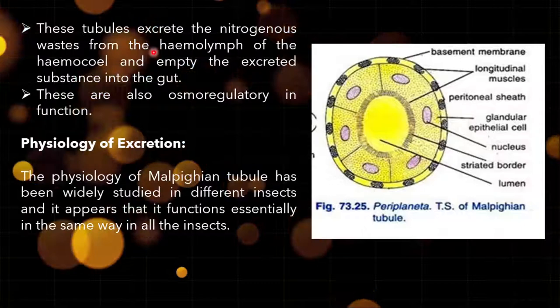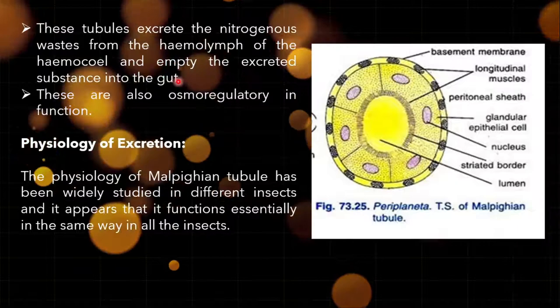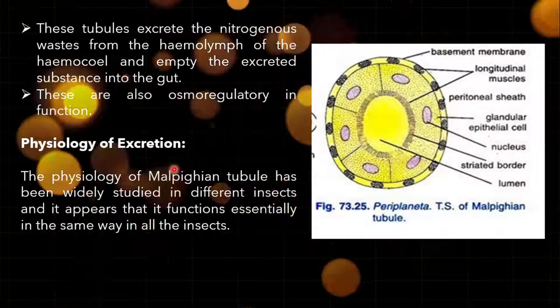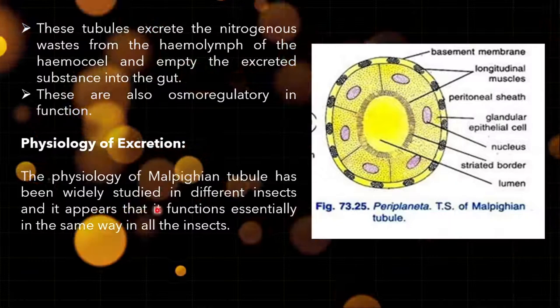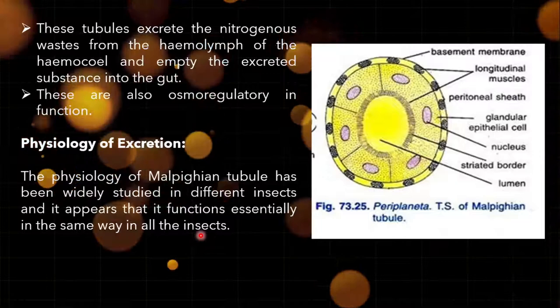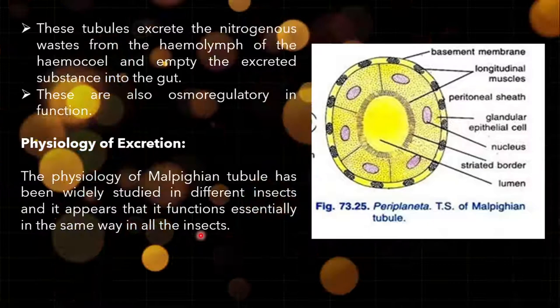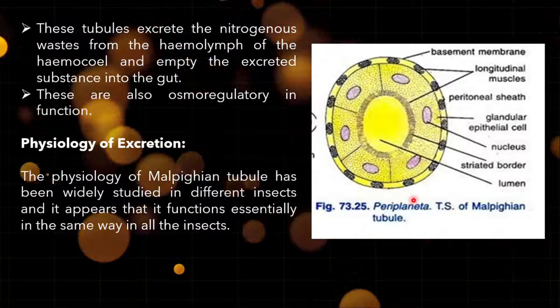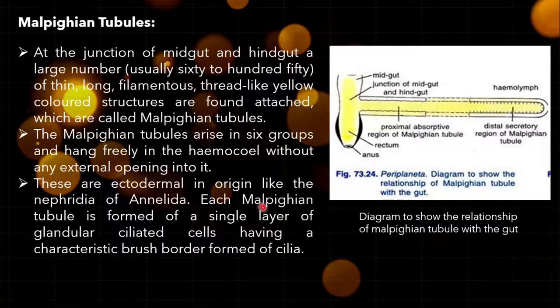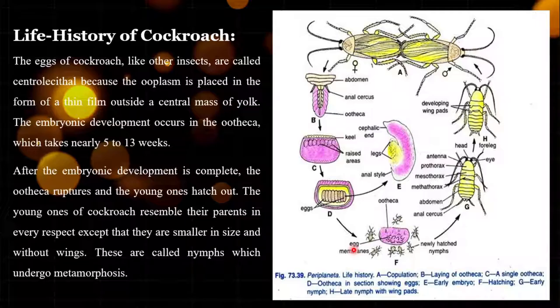These tubules excrete nitrogenous waste from the hemolymph of the haemocoel and empty the excreted substance into the gut. They are also osmoregulatory in function. The physiology of Malpighian tubules has been widely studied in different insects and functions essentially the same way in all insects. In the examination, a short note of four marks may be asked on Malpighian tubules — you should include the TS diagram and these complete points.